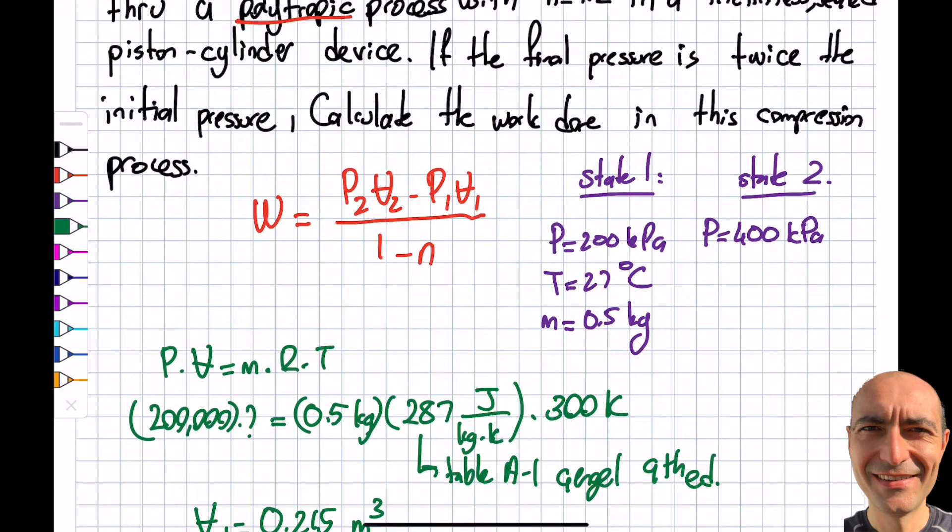So far so good. I'm one more step closer to the final answer. I know my V1 now. The only thing, looking at this equation, n is 1.2 given in the question, is the V2 is not known. So let's address that.